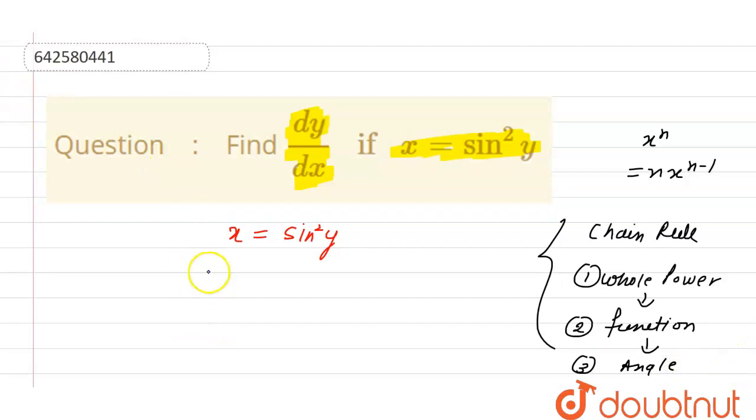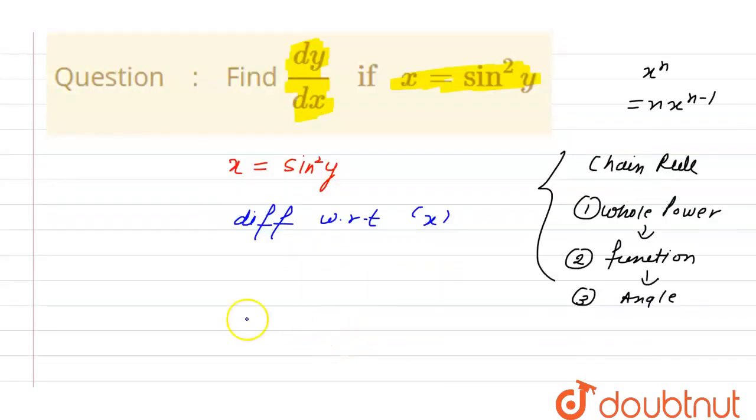So now we can do the differentiation of this line. Differentiation with respect to x. The differentiation of x with respect to x will be 1. Here we need to apply the chain rule. According to that, first we need to differentiate the whole power. Whole power will shift to coefficient and its power decreases by 1.